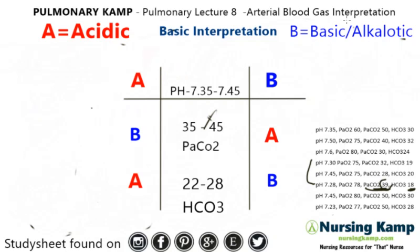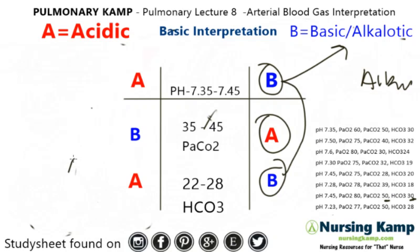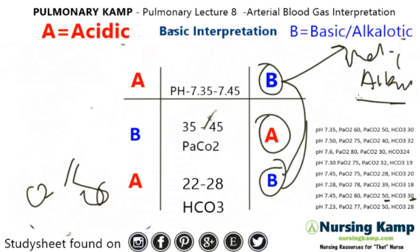Next one — pH is 7.45, so we're closer to the basic side. PACO2 is 50, so it's over on the acidic side. Bicarb is 30, which is over on the basic side. The two Bs go together — we have alkalosis. This is the metabolic column — the kidneys. Metabolic alkalosis.